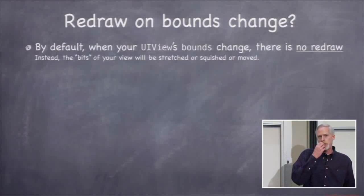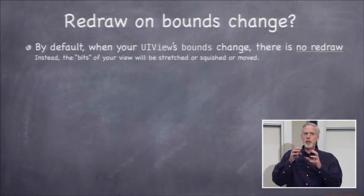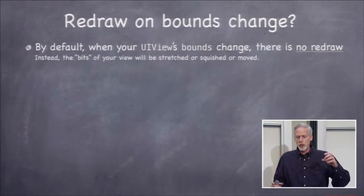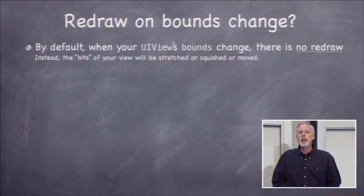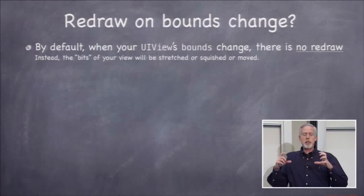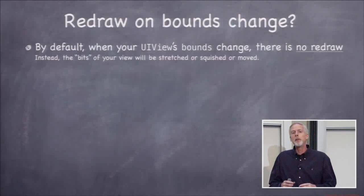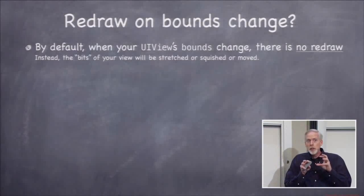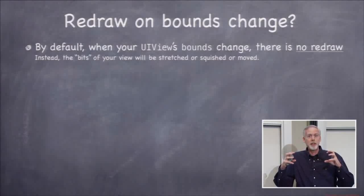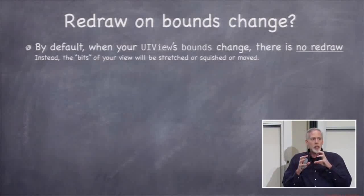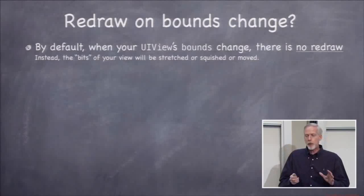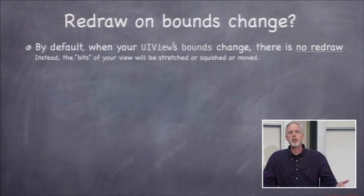What happens when your bounds change? When you use a navigation controller or tab bar, your view's bounds get shrunk to fit. And if you rotate your device, the bounds obviously change. By default, the bits of your view that were last drawn will get stretched — which is almost never what you want, since most content wants to be drawn at high resolution. The default exists because it's far higher performance than asking you to redraw.